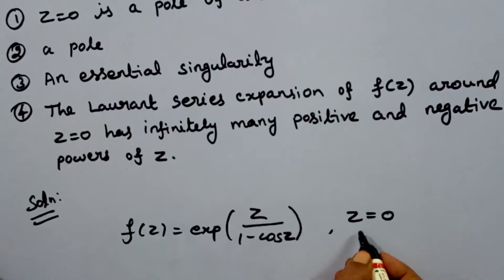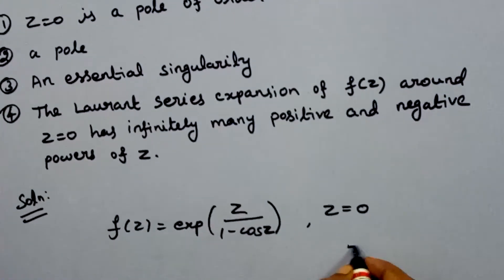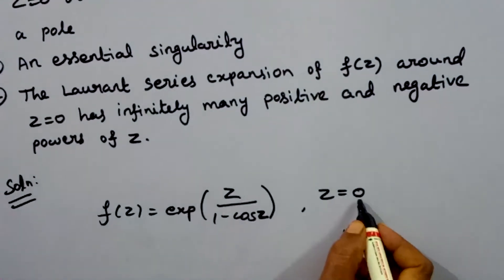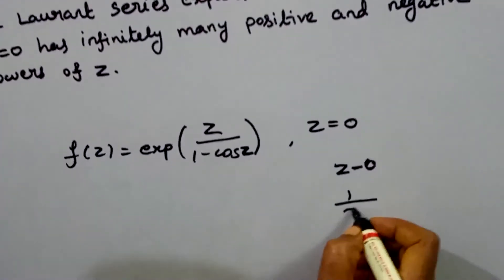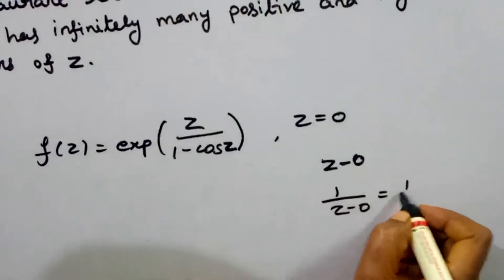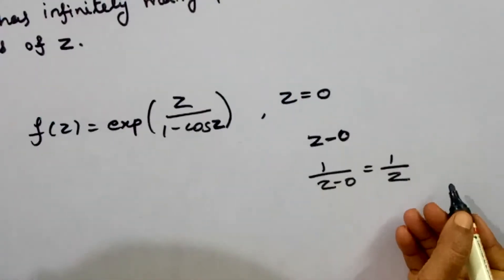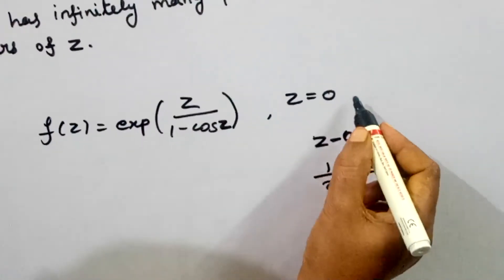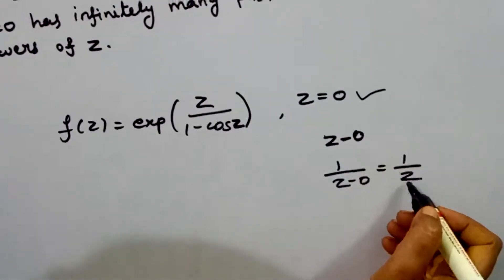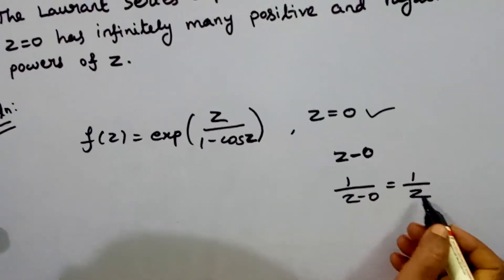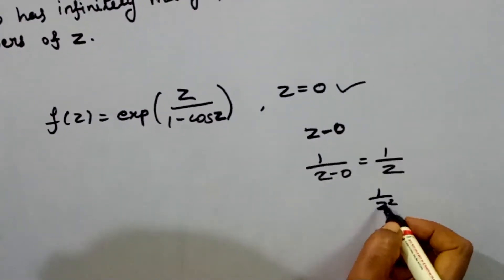If we calculate the given function, we will expand the Laurent series. We look at negative powers: z minus z0, where z0 is 0, so z minus 0 gives negative powers of the form 1 over z. If negative powers exist in the Laurent series expansion and are finite in number, then z equal to 0 is a removable singularity or a pole. For example, 1 over z squared means a pole of order 2.